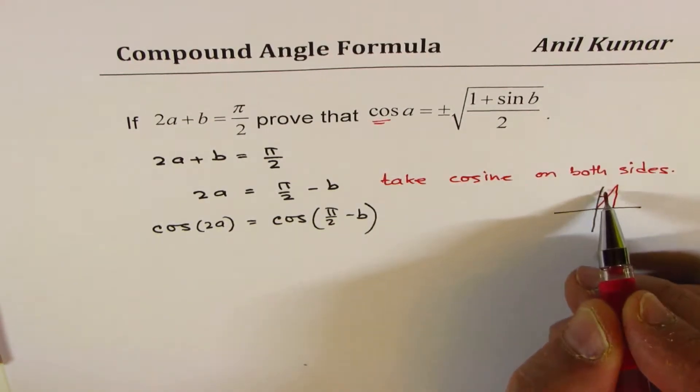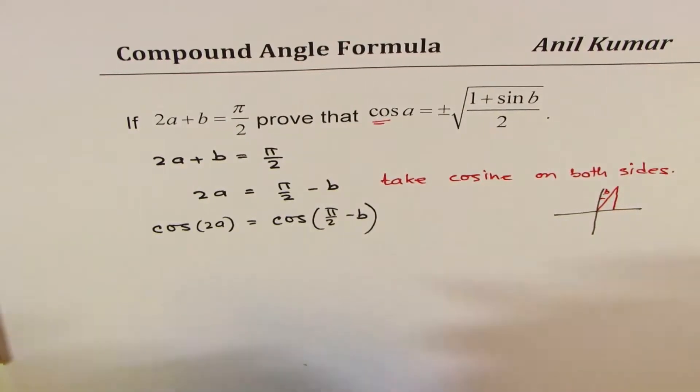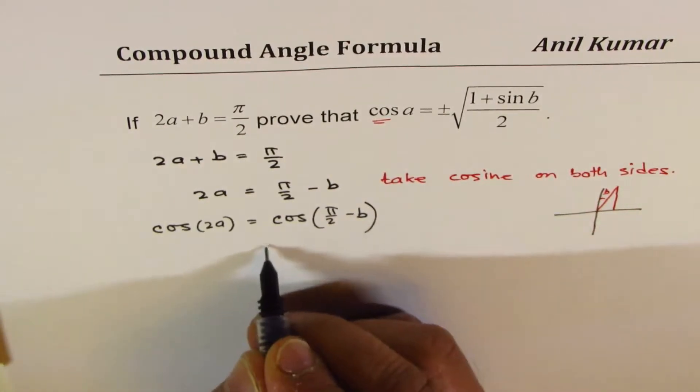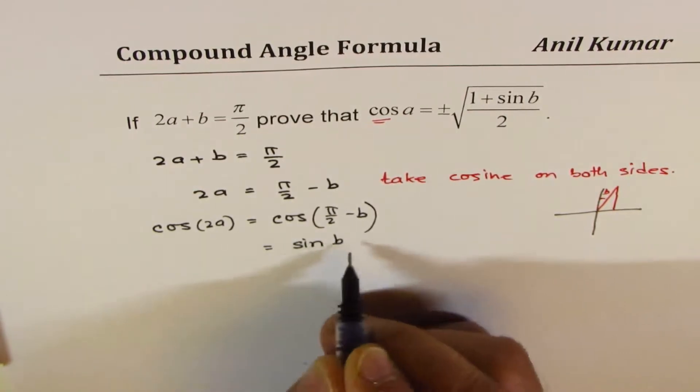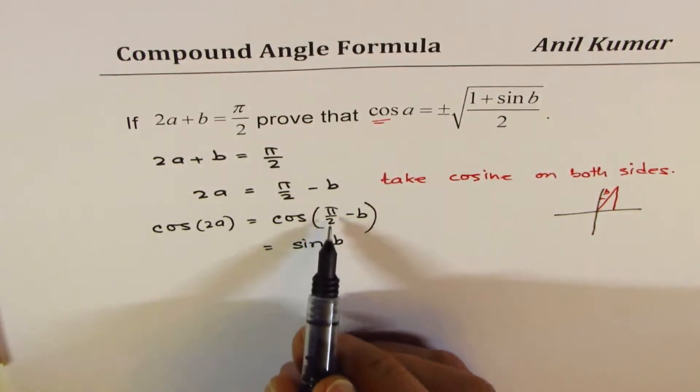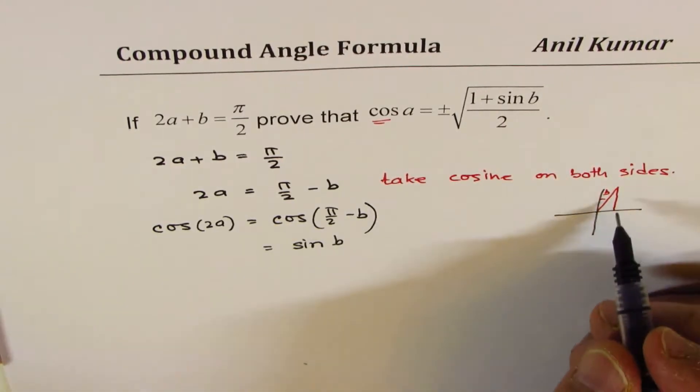Pi by 2 minus b is also equal to sin b. Cos of pi by 2 minus b is sin b. That's very important to understand. In any right angle triangle, these are co-function identities.